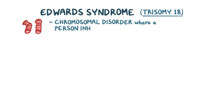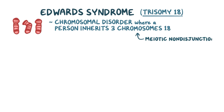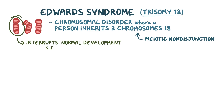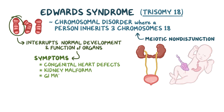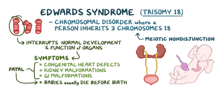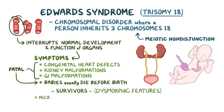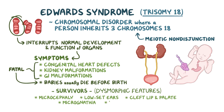Let's quickly recap. Edwards syndrome, or trisomy 18, is a chromosomal disorder where a person inherits three chromosome 18s instead of two, usually as a result of meiotic non-disjunction. The extra chromosome 18 interrupts the normal development and function of various organ systems, causing symptoms like congenital heart defects as well as kidney and GI malformations. Due to these fatal complications, the affected babies usually die before birth, and those that survive will have dysmorphic features like microcephaly, low-set ears, cleft lip and palate, micrognathia, and rocker bottom feet.